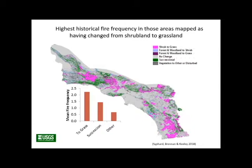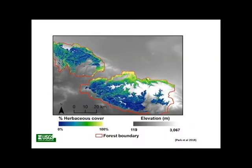This figure — which Marty showed earlier — is from a study in a recently published book. Alex has a chapter in that book documenting changes from shrub to grassland in the coast ranges, from Santa Barbara to San Diego. The purple areas indicate locations that over the last 70 years have converted from shrubland to grassland.